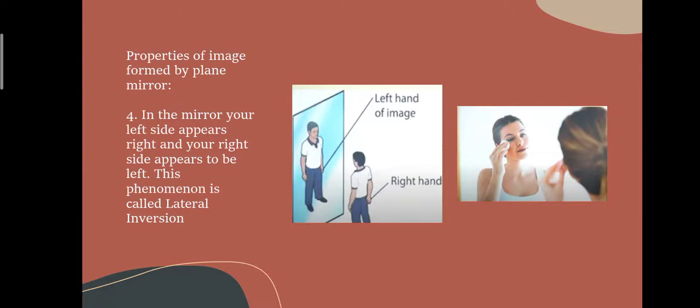The fourth property: images formed in a plane mirror are laterally inverted. What is lateral inversion? When you raise your left hand, your image in the mirror appears to raise its right hand. This property of inversion is called lateral inversion. So these are the four properties of a plane mirror.